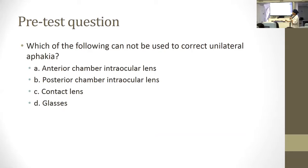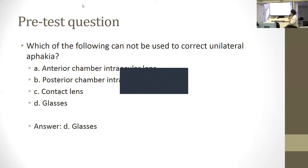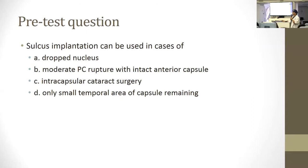Returning to our opening questions: which of the following cannot be used to correct aphakia in one eye? D is the correct answer — aphakic glasses — because you'd get too much anisometropia, or difference in image disparity between the two eyes.